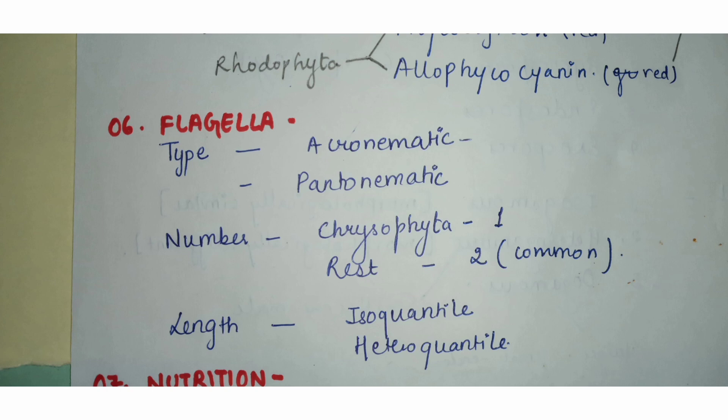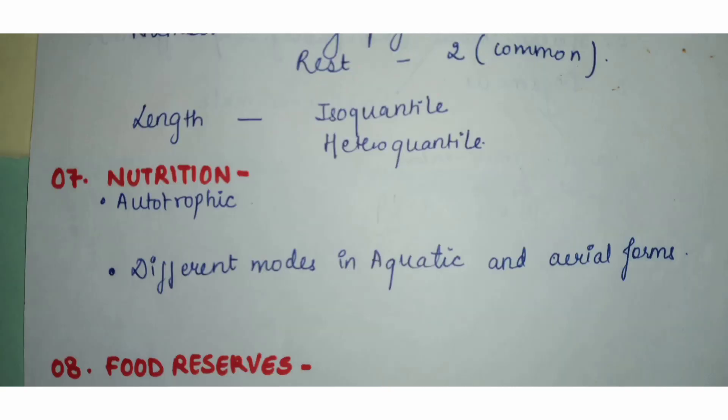Heterokont flagella are of different lengths. There is also classification based on the position of flagella on the algal cell — they may be lateral or at other positions.